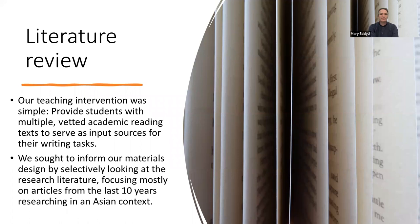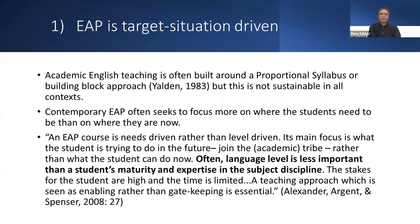Before starting our research, we sought to inform ourselves about what's going on in the research literature, looking mostly at articles from the last ten years or so in an Asian context, similar to the one we have here in the south of China. The first problem we came up against is the idea of the proportional syllabus or building block approach versus a deep end EAP approach. Basically, the proportional syllabus is not sustainable any longer, and contemporary EAP is focused on where the students need to be more than where they are now. A quote from Alan Alexander sums up the situation: language level is actually less important than the student's commitment to get expertise in their subject discipline, and a teaching approach that is enabling rather than exclusive is probably more beneficial. You need to be target-situation driven rather than deterred by the student's current level.